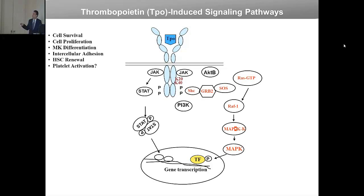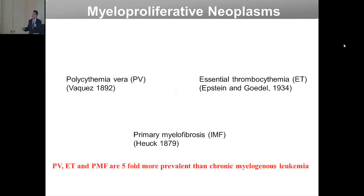As opposed to the EPO receptor, which is really erythroid-specific, the thrombopoietin receptor is expressed from the hematopoietic stem cell through the megakaryocytes. It is required for megakaryocyte differentiation, and it's also present on platelets. So it's a receptor that accompanies the entire hematopoiesis.